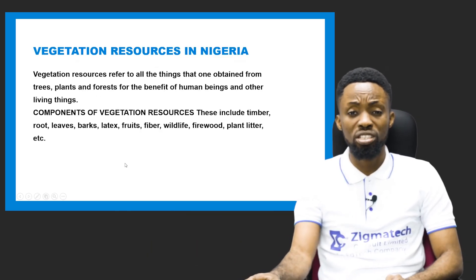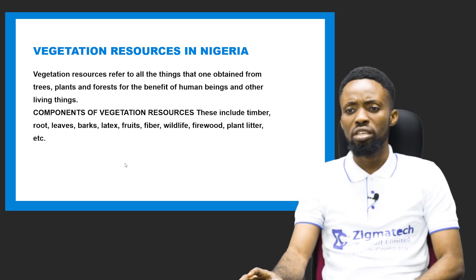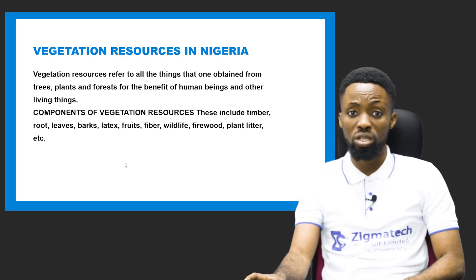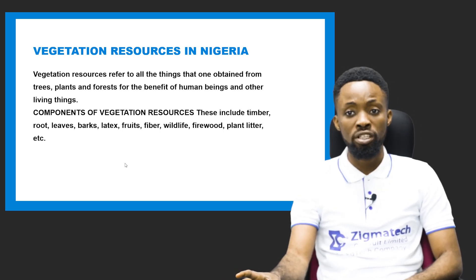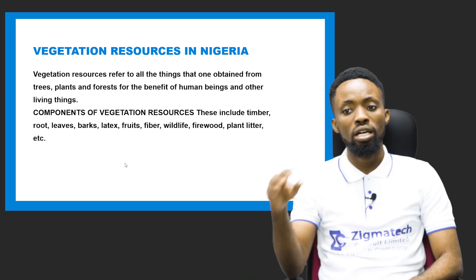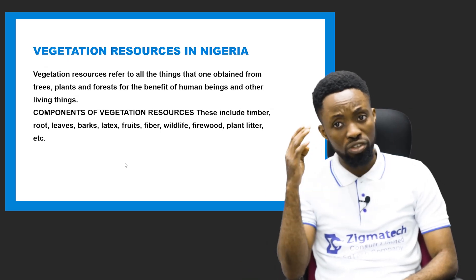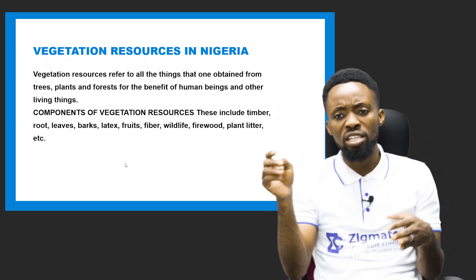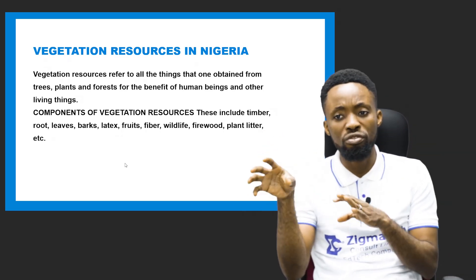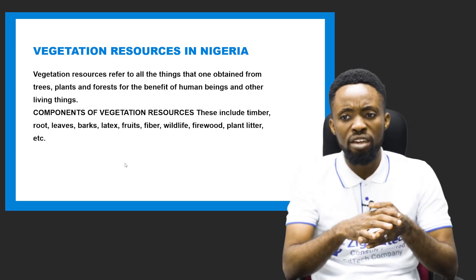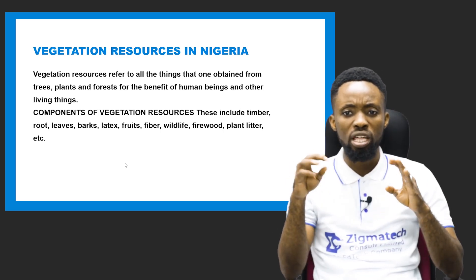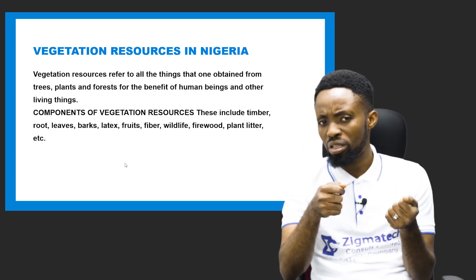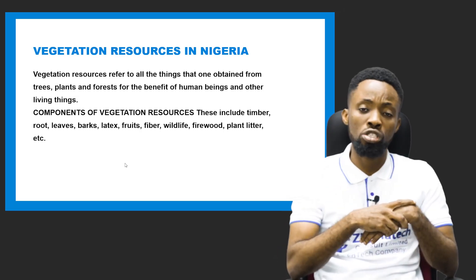The next resource is vegetation resources. Anything that can be obtained from trees, plants, and forests for the benefit of human beings and other living things is a vegetation resource. The components of vegetation resources include roots, timbers, leaves, latex, barks, fruits, fibers, wildlife, firewood, and plant litter. These are the things from the vegetational zone that we use to better ourselves.